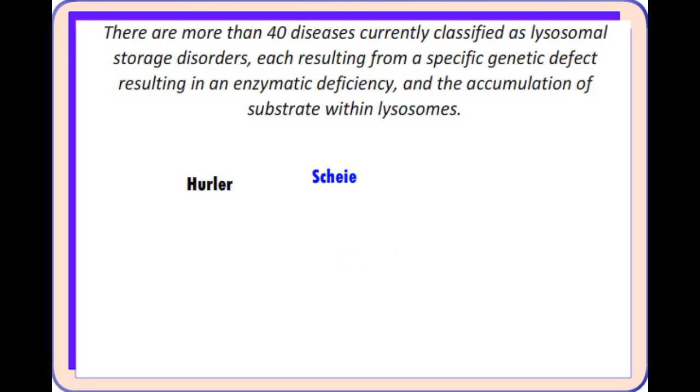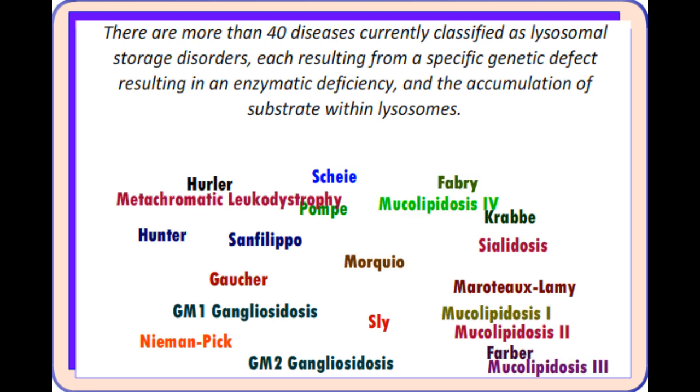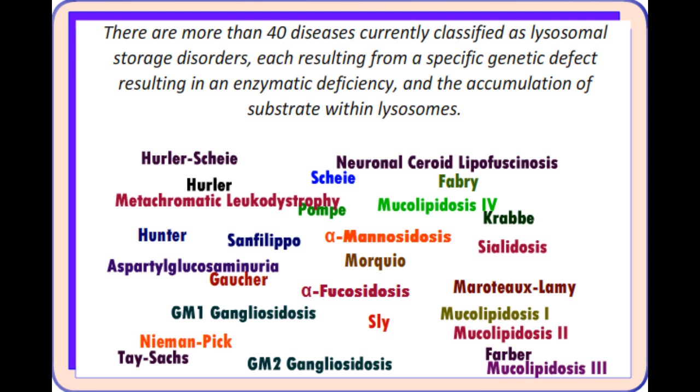There are more than 40 diseases currently classified as lysosomal storage disorders, each resulting from a specific genetic defect resulting in an enzymic deficiency and the accumulation of substrate within lysosomes.